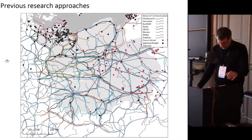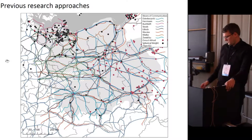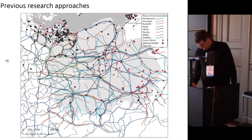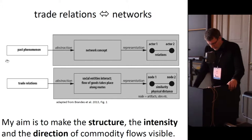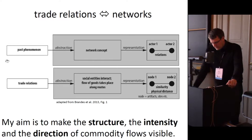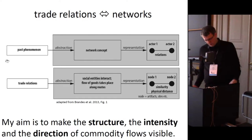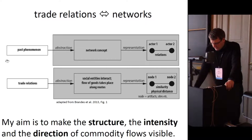It also remains untold how intense the flows between different regions were. Another possibility to study trade relations lies in generating and evaluating formal networks. My network concept includes that people act over broad distances and commodities move alongside routes. The network is represented through nodes and edges as common. The aim is to capture the structure, intensity, and direction of the commodity flows.